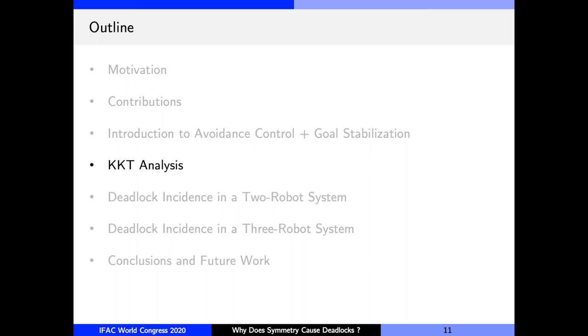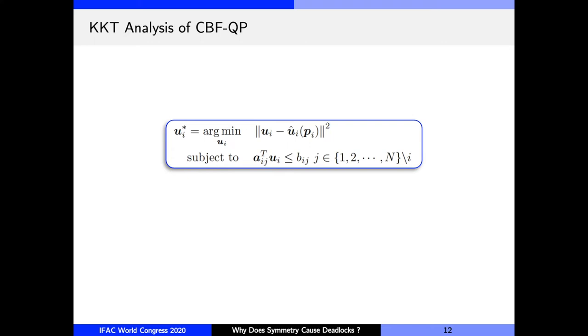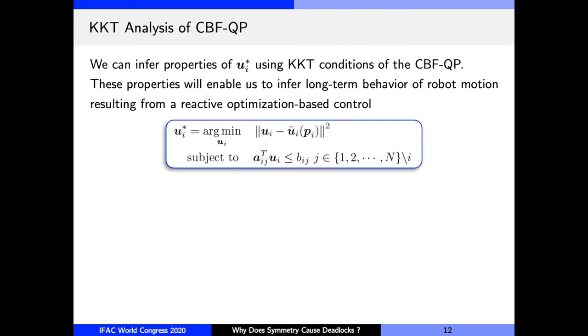So to do that analysis, we will investigate the KKT conditions of the CBF QP. Since the CBF QP is an optimization problem, we can infer properties of its solution u_i^star while looking at the KKT conditions of this optimization. Why are we doing this? Well, we want to infer long-term properties of robot motion, but the control is computed at every time step through an optimization. The KKT conditions will give us an analytical expression for control to help us with this long-term analysis.